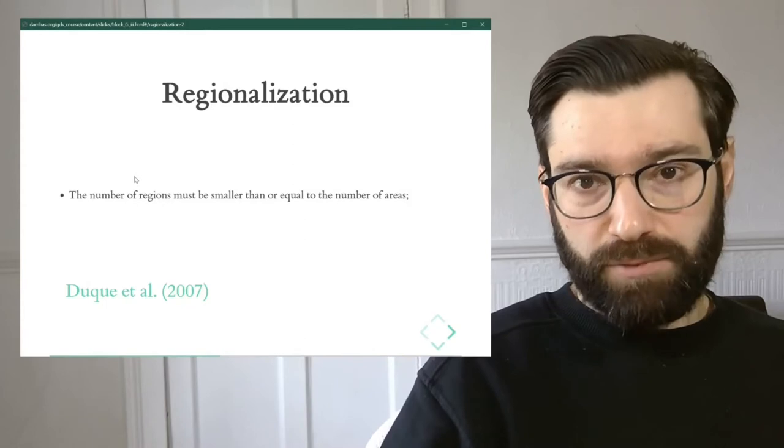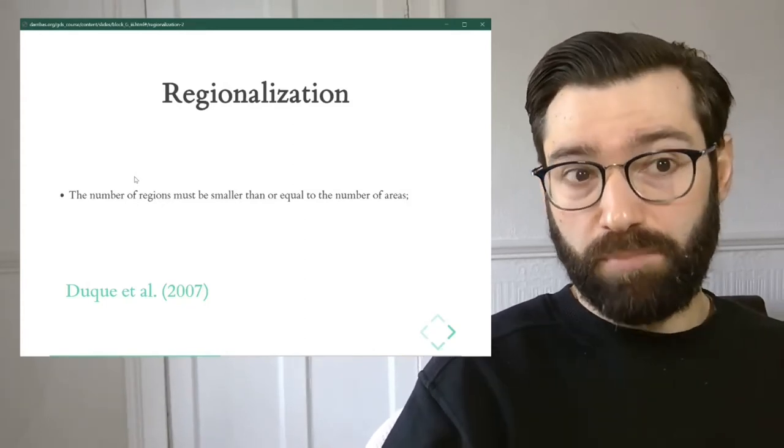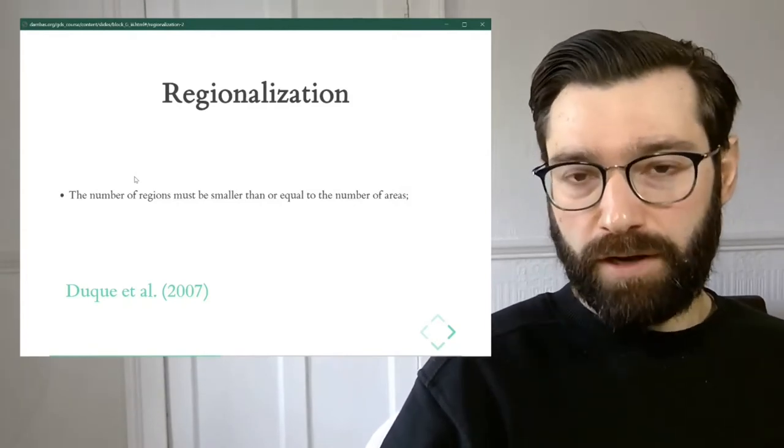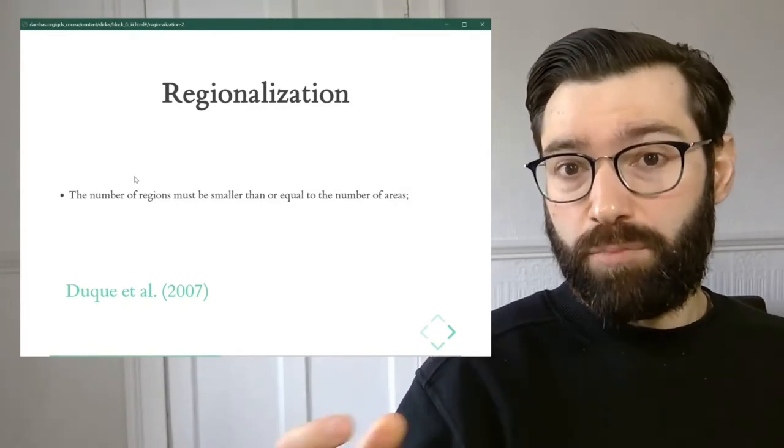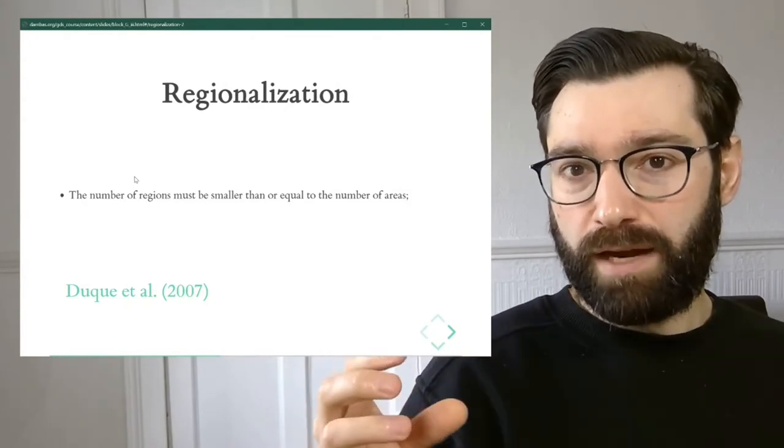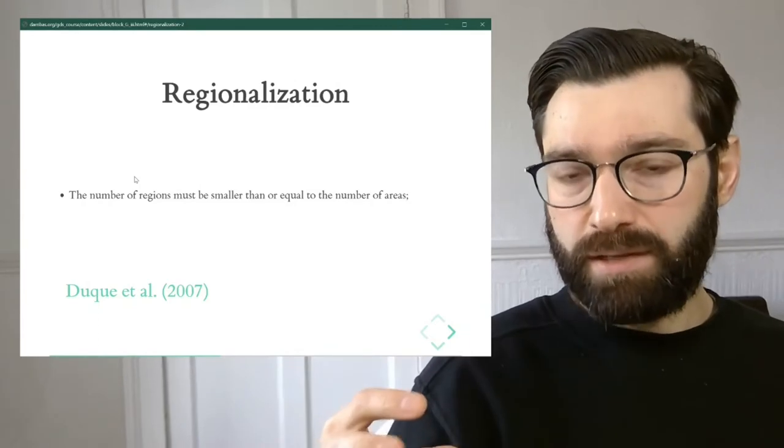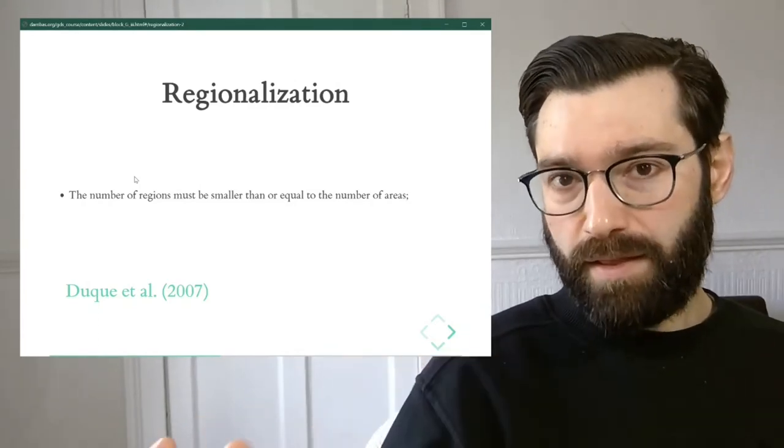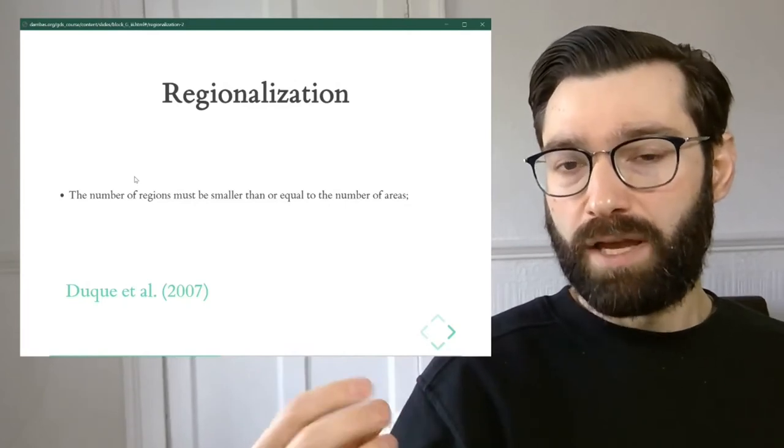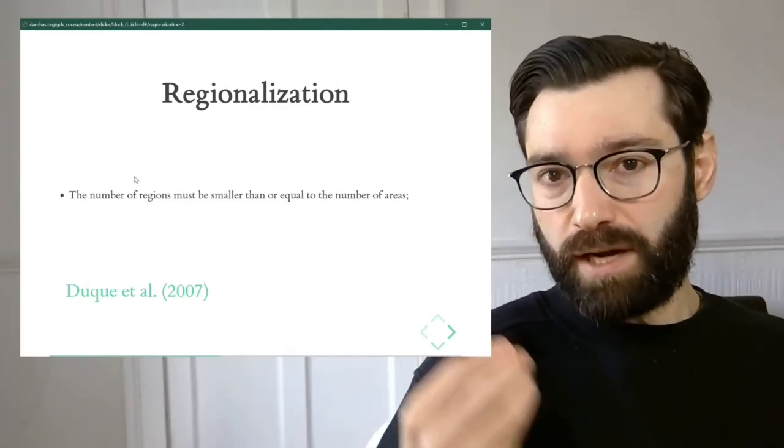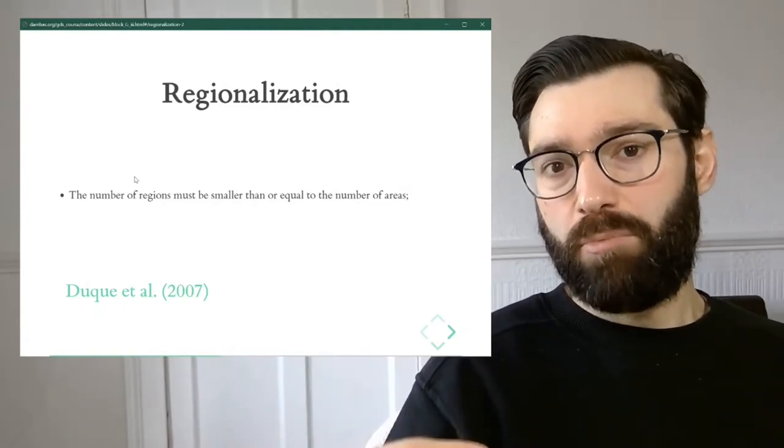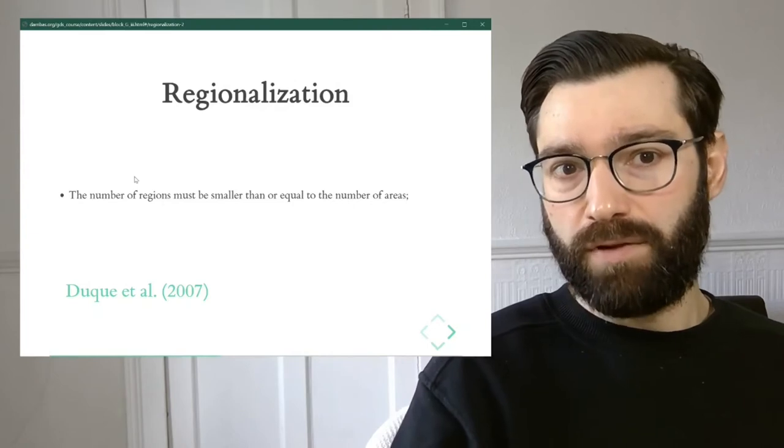The next one, the third one, is that the number of regions must be smaller or equal to the number of areas. This is to say that we're performing an aggregation. If we have a number of areas n that are being aggregated into a number of regions k, then k needs to be equal or smaller. We can only have in the extreme each area being part of a region, but in most cases we will have a smaller number of regions than that of areas.